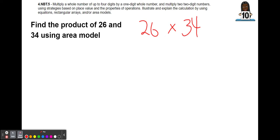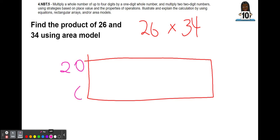Then since there are four digits, there will be four parts of our rectangle. So I'm going to draw the rectangle and now we have to break apart each number to separate the tens and the ones. The number 26 has two tens and six ones. The number 34 has three tens and four ones.